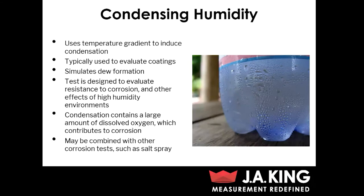For the final type of environmental testing, we've got condensing humidity testing. This uses a temperature gradient to actually induce condensation on the surface of the part itself. It's typically used to evaluate coatings as it simulates deformation on the surface of the part. The test is designed to evaluate resistance to corrosion as well as other effects of high humidity environments. The reason condensing humidity testing can be so useful for evaluating resistance to corrosion is that condensation, by its nature, contains a large amount of dissolved oxygen. When this oxygen-rich moisture attaches itself to the surface of the part, that can heavily contribute to corrosion, more so than a precipitation test or high humidity test would.